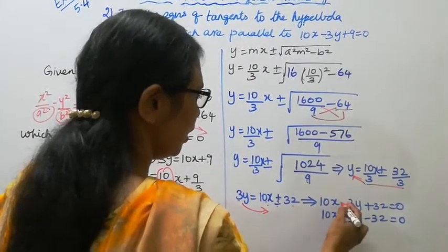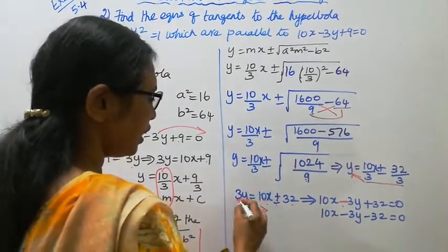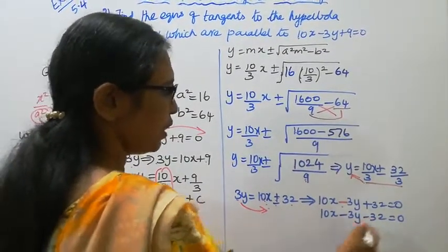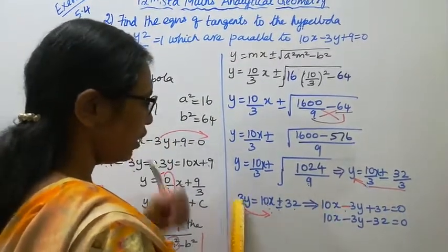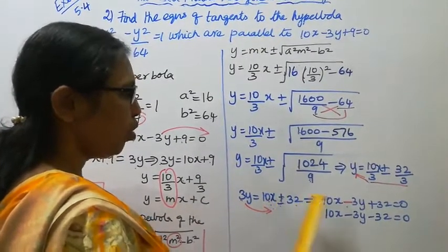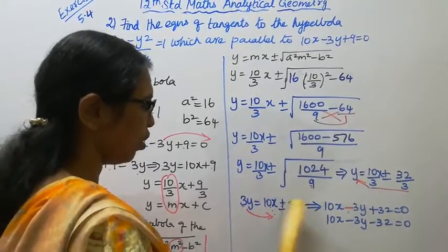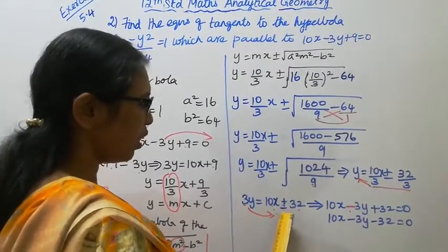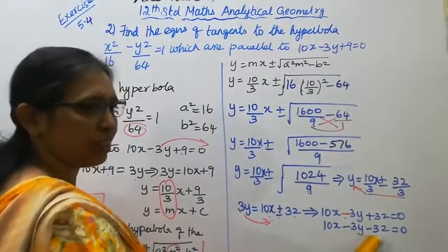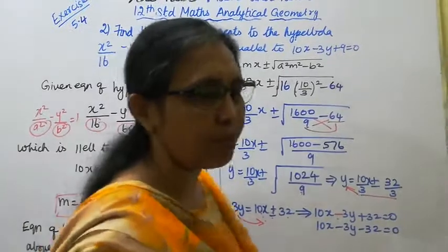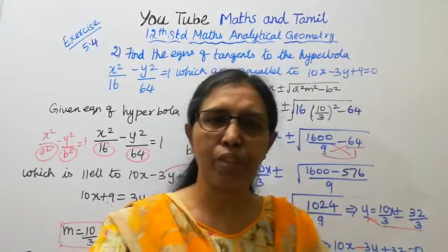The equations of the tangents are 10x minus 3y plus 32 equal to 0 and 10x minus 3y minus 32 equal to 0. Please subscribe to the channel and click the bell button to help us reach 100 marks.